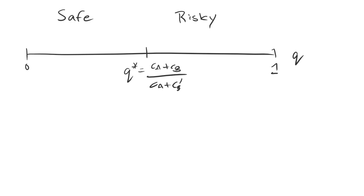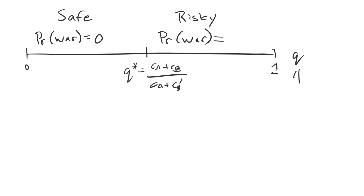We can think about the probability of war in each of these cases. With the safe demand, the probability of war is equal to zero, because both types are accepting the demand. In contrast, with the risky demand — when Q is greater than Q* — we do observe a positive probability of war. The high-cost type is accepting, the low-cost type is rejecting. Since the low-cost type exists with probability 1 minus Q, our expected probability of war is 1 minus Q.